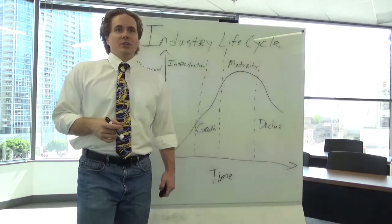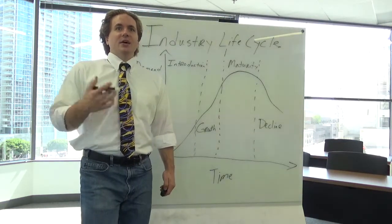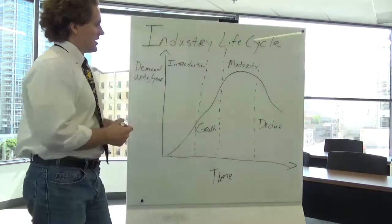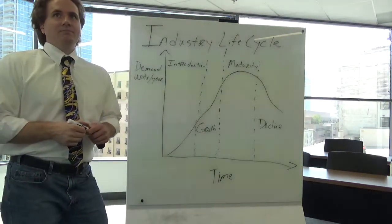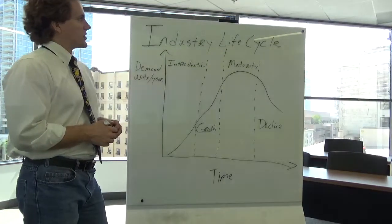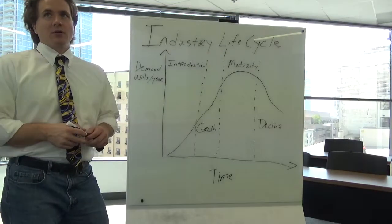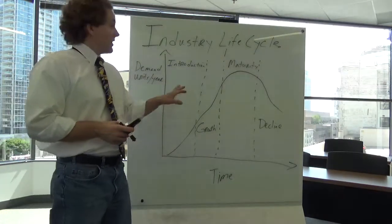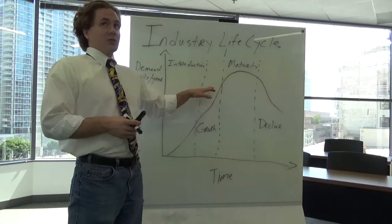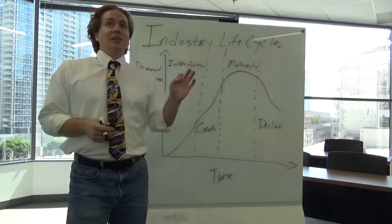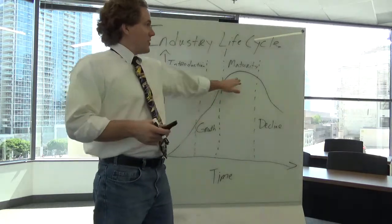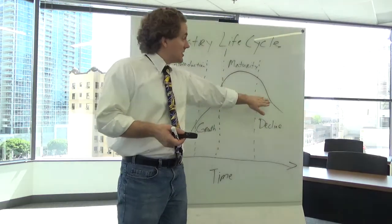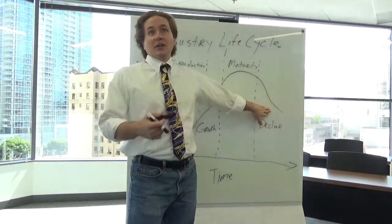Now another thing that I want you to take away from this is the fact that product and process innovation have also kind of a relationship to each other. So when you're talking about the introduction phase, you have a lot of product innovation. When you talk about the growth phase, you have a little less product innovation. When you get to the maturity phase, you have even less product innovation. And when you have the decline phase, you have very little product innovation.